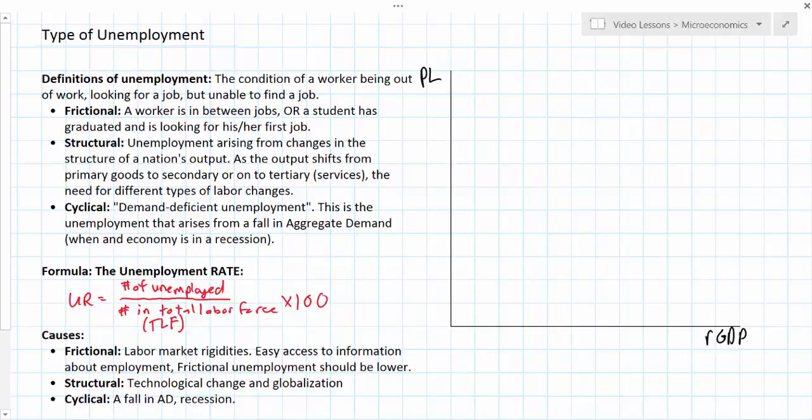I'm going to draw a long-run aggregate supply curve which you would have learned about in an earlier lesson by this point. The long-run aggregate supply curve is vertical at a nation's full employment level of output.